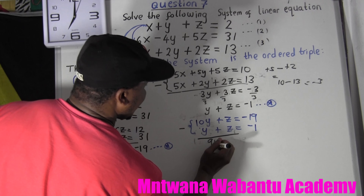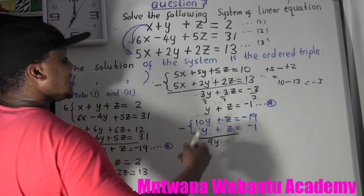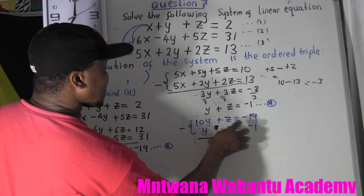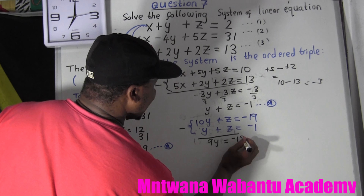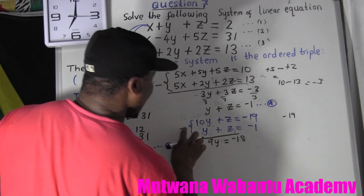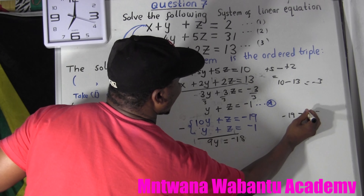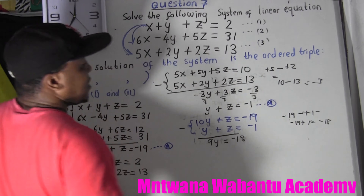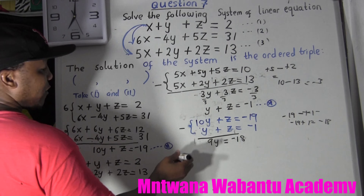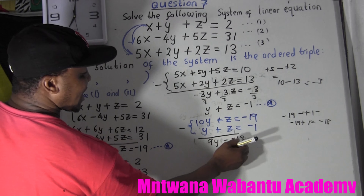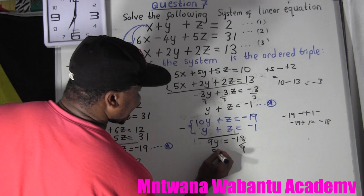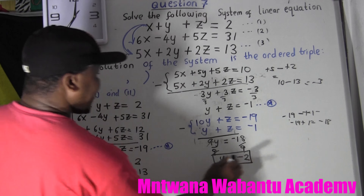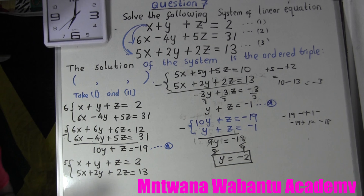Subtracting: 10y - y = 9y. Then z - z = 0. And -19 - (-1) = -19 + 1 = -18. So 9y = -18. Dividing both sides by 9 gives y = -2.